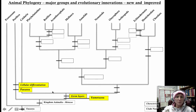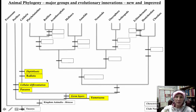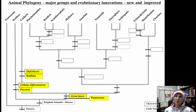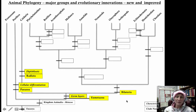The first split within the eumetazoa we covered last time: the radiata, of which we looked at the cnidarians. The radiata are characterized by being radially symmetric and are derived from two germ cell layers — so they're diploblastic — with an ectoderm and an endoderm. The other side, which we're covering this week, is the bilateria. All the rest of the organisms in the tree are bilaterally symmetric, and they are triploblastic — derived from three cell layers.